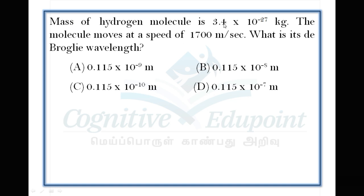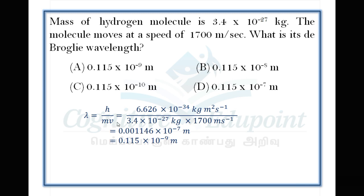Next question: The hydrogen molecule mass is 3.4 × 10^-27 kilogram. The molecule moves at a speed of 1700 meter per second. What is its de Broglie wavelength? The correct answer is 0.115 × 10^-9 meters. Correct answer is A. Simple question.